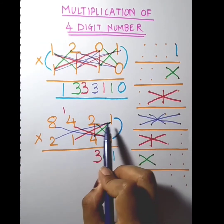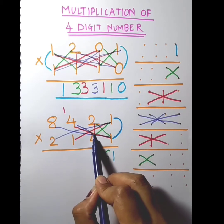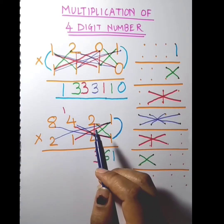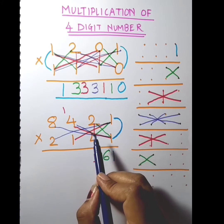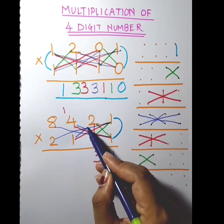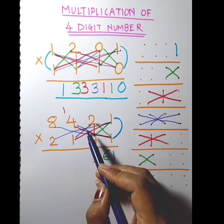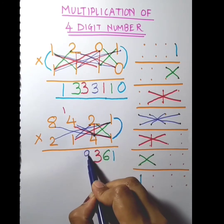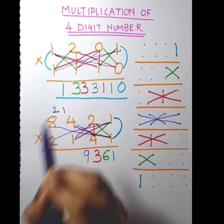So that gives 10. Then 4 into 4 is 16, so 10 plus 16 is 26. And 2 into 1 is 2, so 26 plus 2 is 28, plus carry 1 gives 29 — again carry 2.